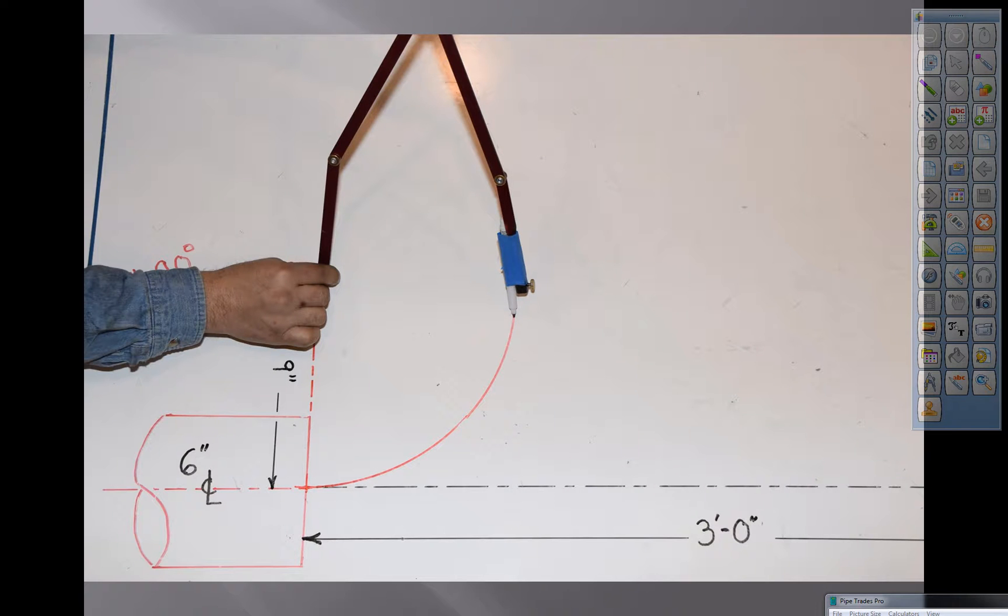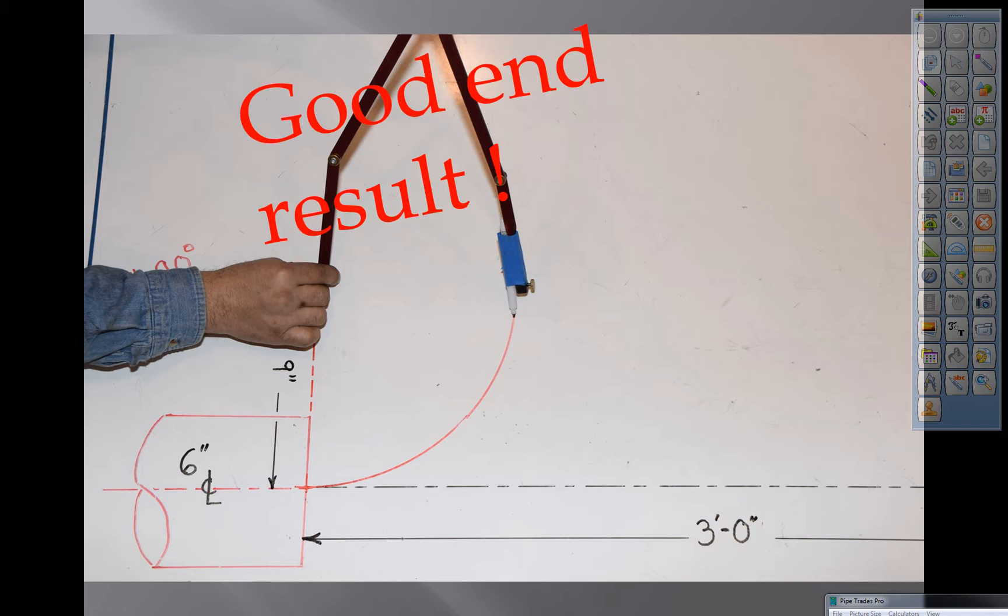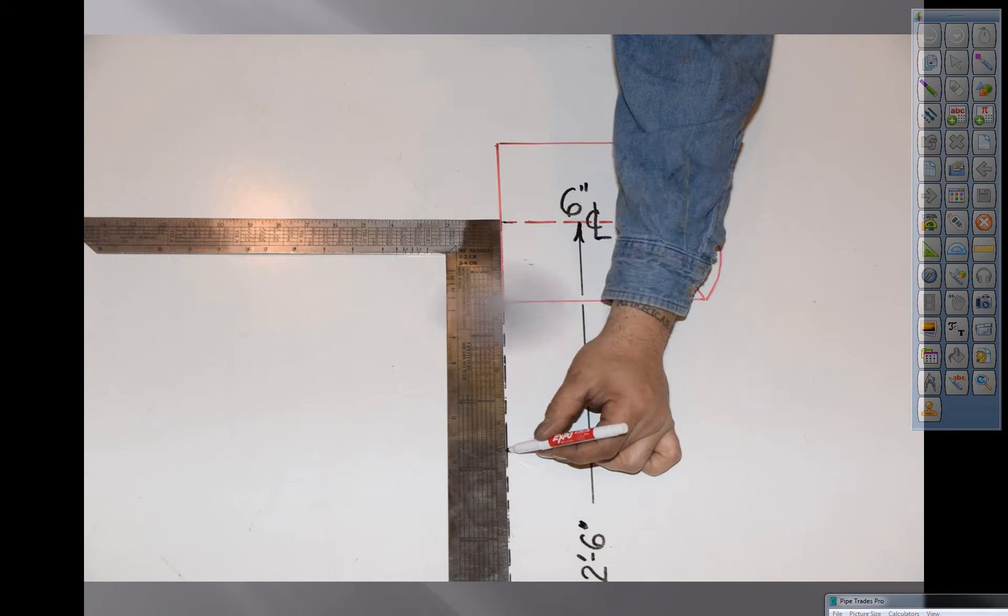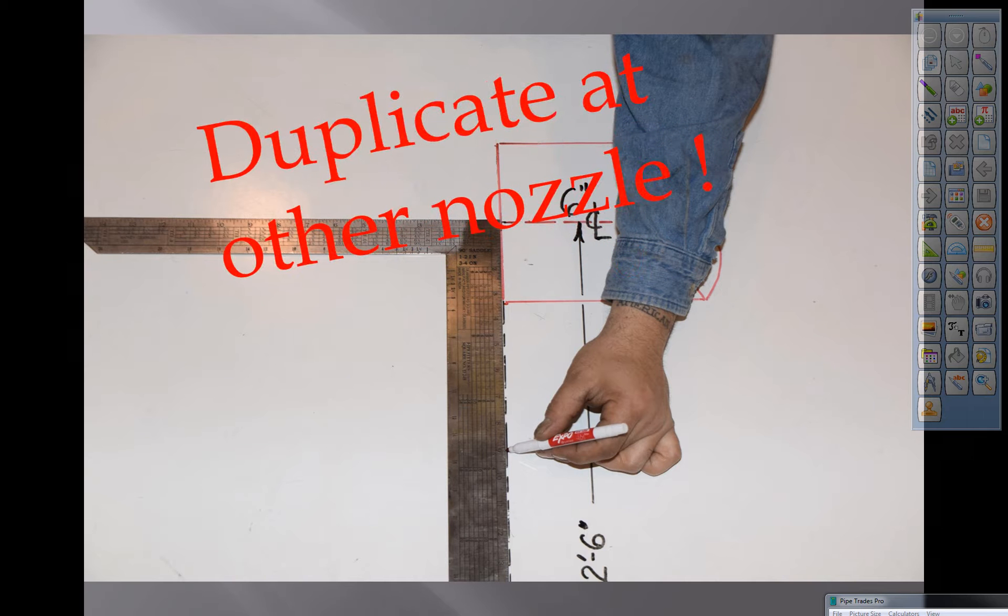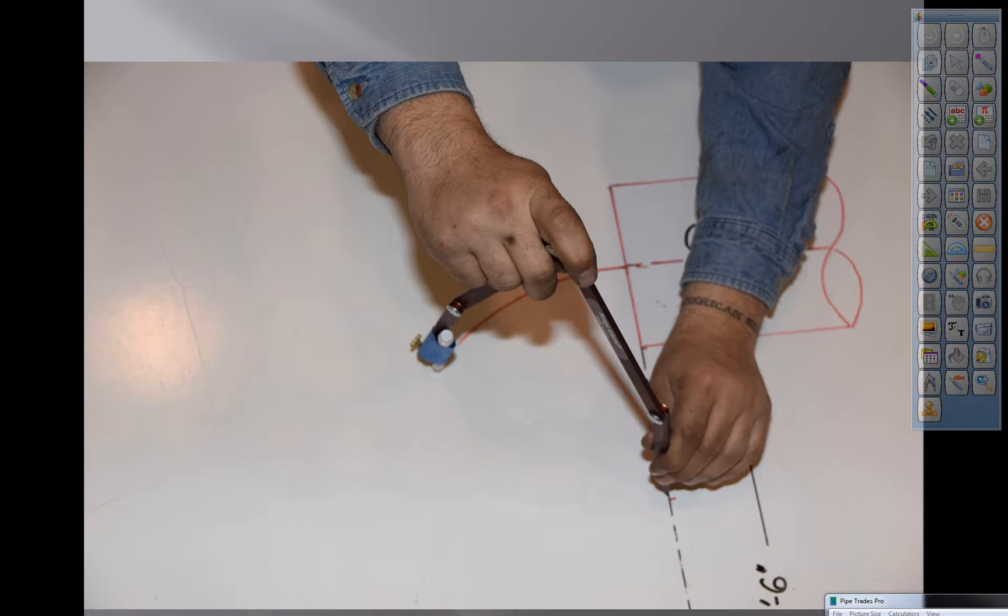We're going to draw a line. We have to come up with the angle of fitting here, the fitting takeoff, and the end. So what we did was we drew it long. We're going to go up on top. Do the same thing up on top. Put a mark in. Compass is set at nine inches, the takeoff of a six inch long radius weld elbow.